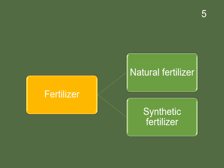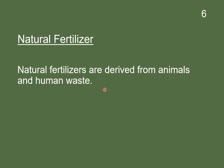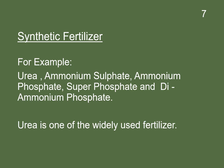Fertilizers are of two types: natural fertilizer and synthetic fertilizer. Natural fertilizers are derived from animals and human waste. Examples of synthetic fertilizers include urea, ammonium sulfate, ammonium phosphate, superphosphate, and diphosphate.